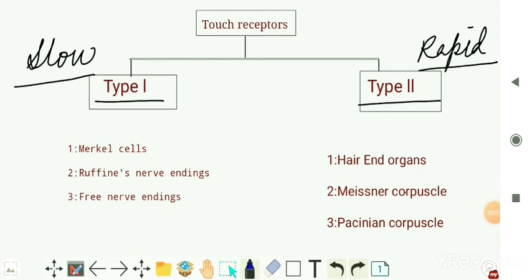Type 1 touch receptors can be remembered by a mnemonic MRF. M stands for Merkel cells, R stands for Ruffini's nerve endings, and F stands for free nerve endings.